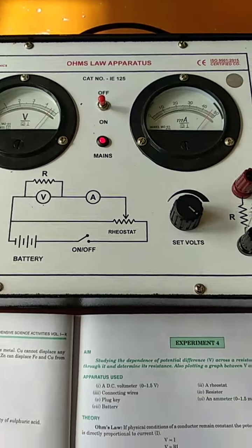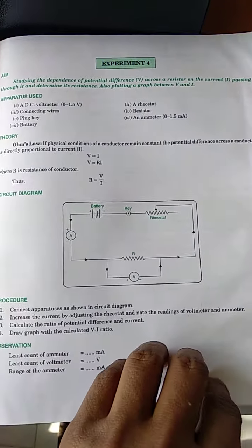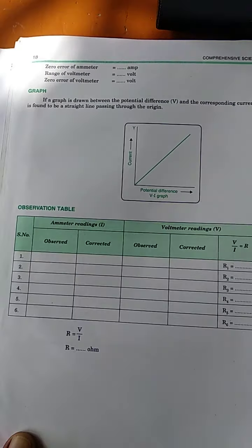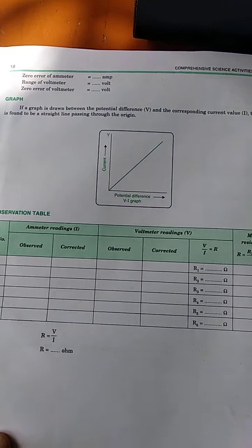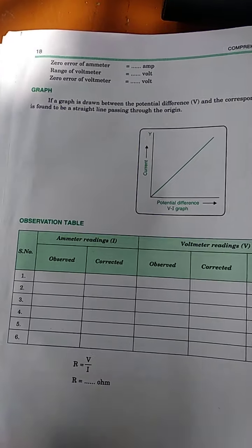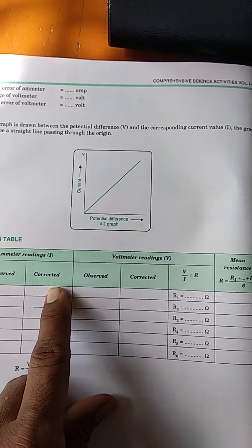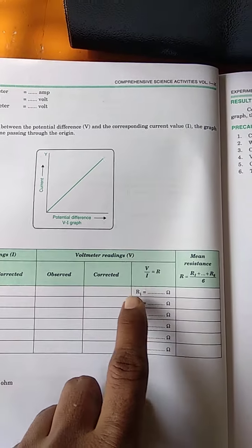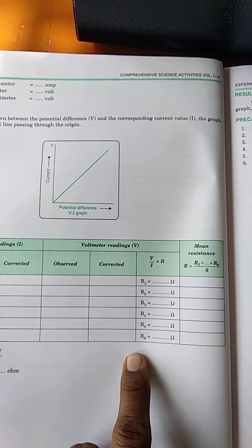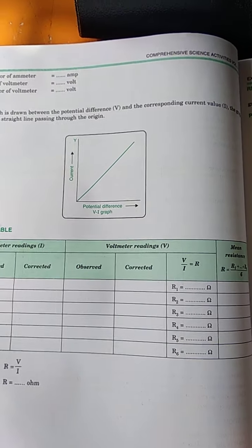So I hope you have enjoyed this video. Thank you so much for watching and you can plot a graph, this will be like linear graph same way. And this is the observation table, what we have observed, what is corrected, observed is same, corrected is same. Here is R1, R2, you can calculate like this. This is how you will calculate the resistance, R is equal to V upon I. Thank you so much.